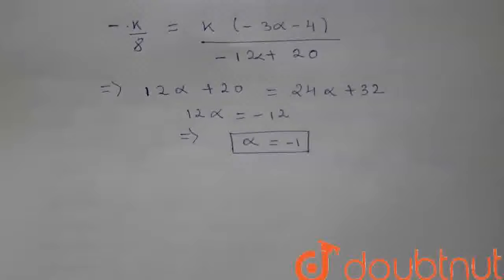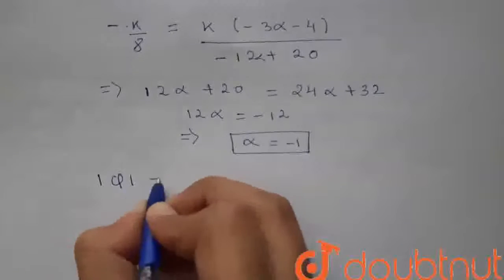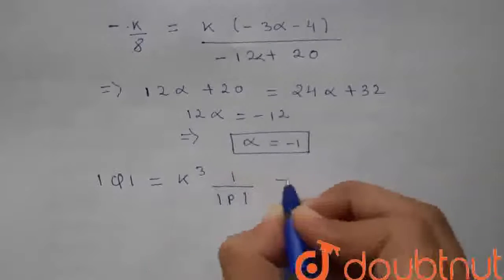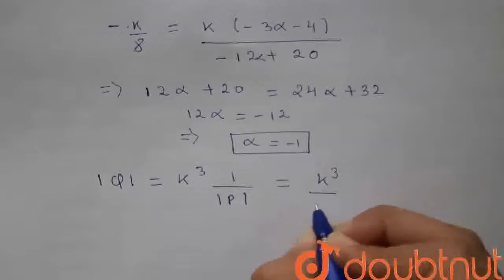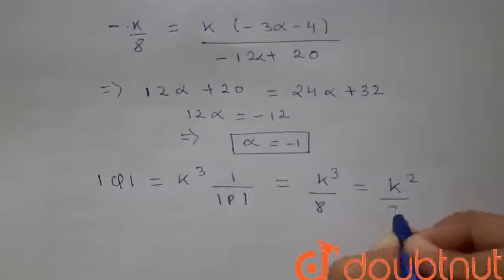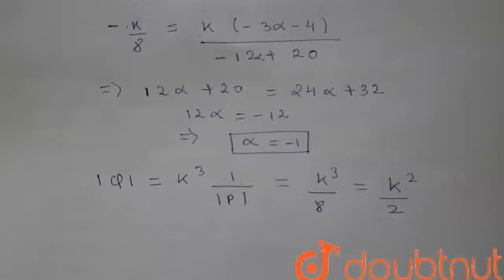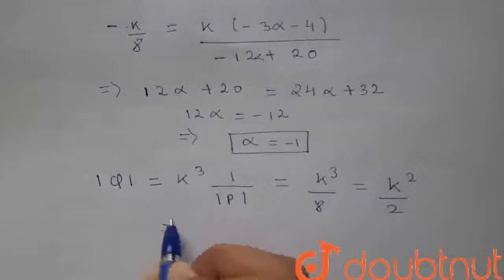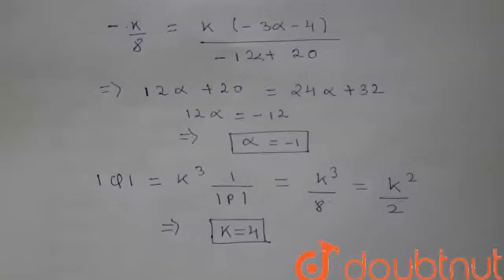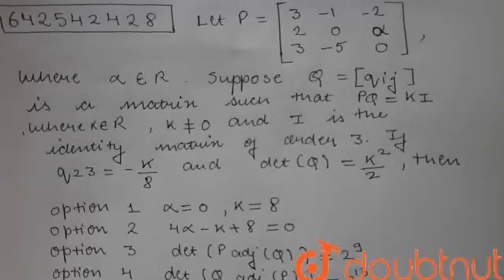Now we will find the determinant of Q. Determinant of Q = K³ · (1/det(P)). With det(P) = 8 (using alpha = -1), we get det(Q) = K³/8. We are given det(Q) = K²/2, so K³/8 = K²/2, which simplifies to give K = 4.